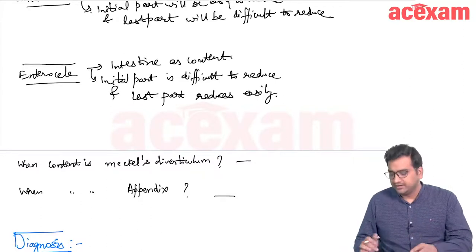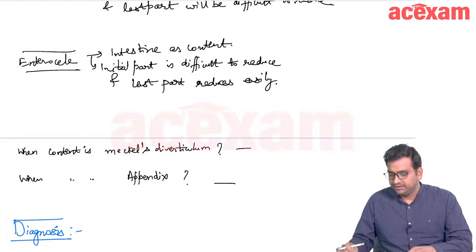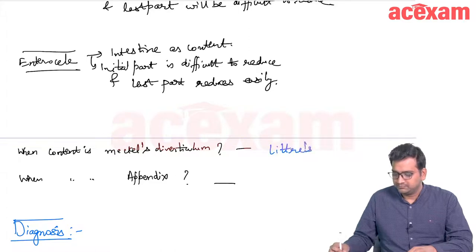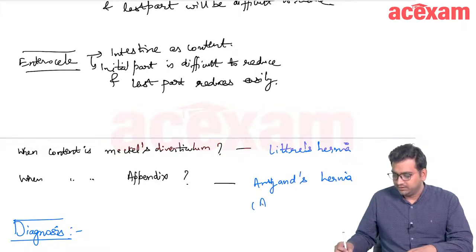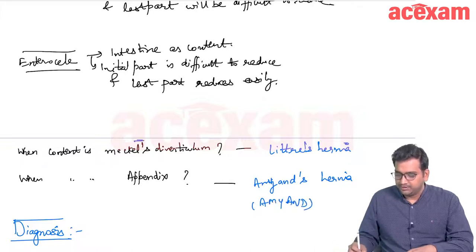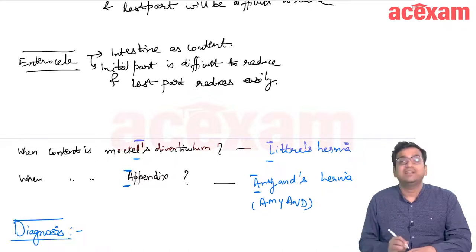Two named inguinal hernias: whenever the content is Meckel's diverticulum, it is called Littre's hernia. Whenever the content is the appendix, it is called Amyand's hernia.